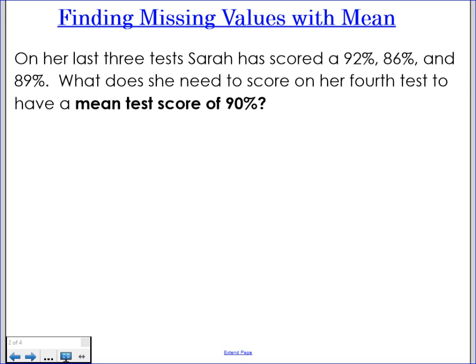We're going to be looking at how to find missing values when you're given the mean. Let's read this example that we have here on our screen. It says on her last three tests, Sarah has scored a 92%, 86%, and an 89%. What does she need to score on her fourth test to have a mean test score of 90%?